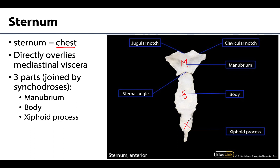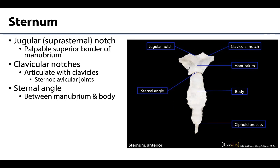Most of these synchondrosis joints will totally calcify, but they may not — particularly between the manubrium and the body, which sometimes will not completely calcify. A few structures we want you to identify on the sternum: the majority are associated with the manubrium. The first is the jugular notch.